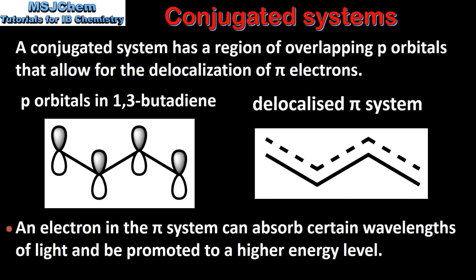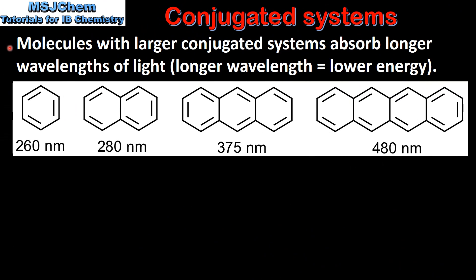An electron in the pi system can absorb certain wavelengths of light and be promoted to a higher energy level. Molecules with larger conjugated systems absorb longer wavelengths of light. Longer wavelengths of light have lower energy.